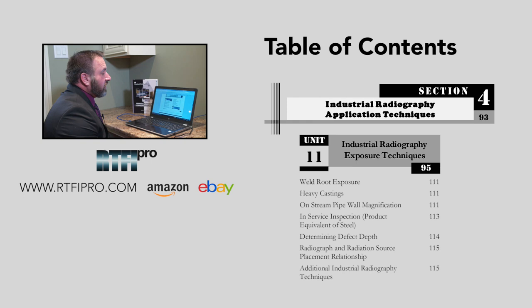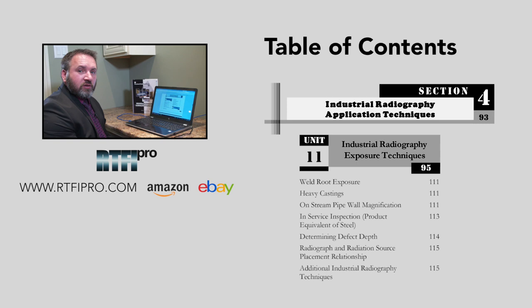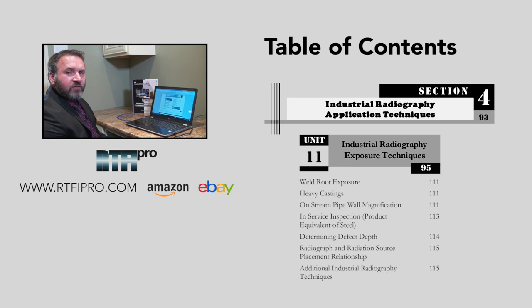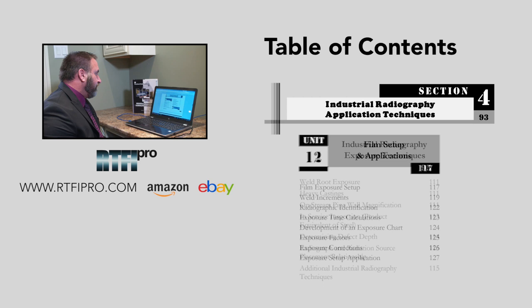Additional topics in unit eleven include miscellaneous exposure techniques, weld density and thickness relationship, weld root exposure, heavy castings, on-string pipe wall magnification, in-service inspection, product equivalent of steel when you have liquid in pipes, determining defect depth, radiograph and radiation source placement relationship, and additional radiography techniques. There are about 38 or 39 figures in that unit alone — a massive unit with great illustrations of the different techniques.